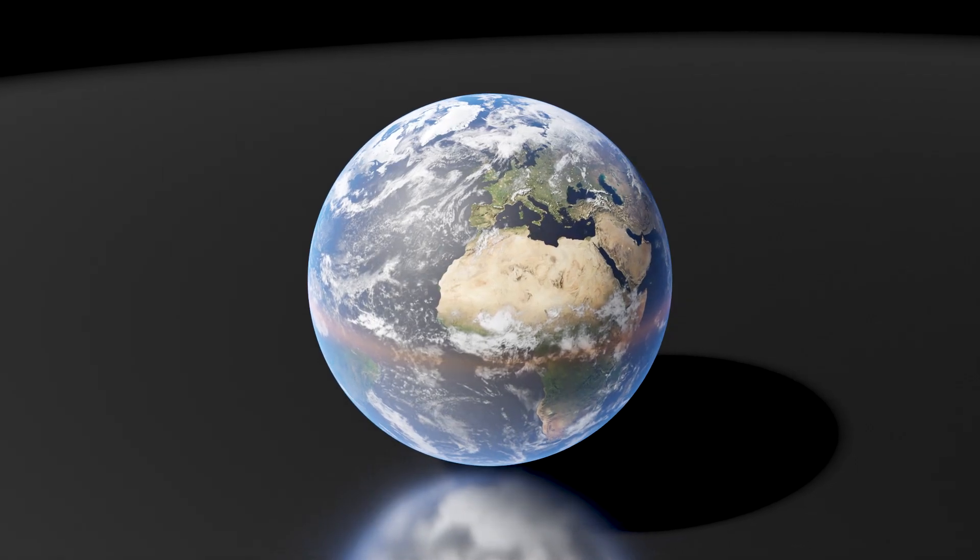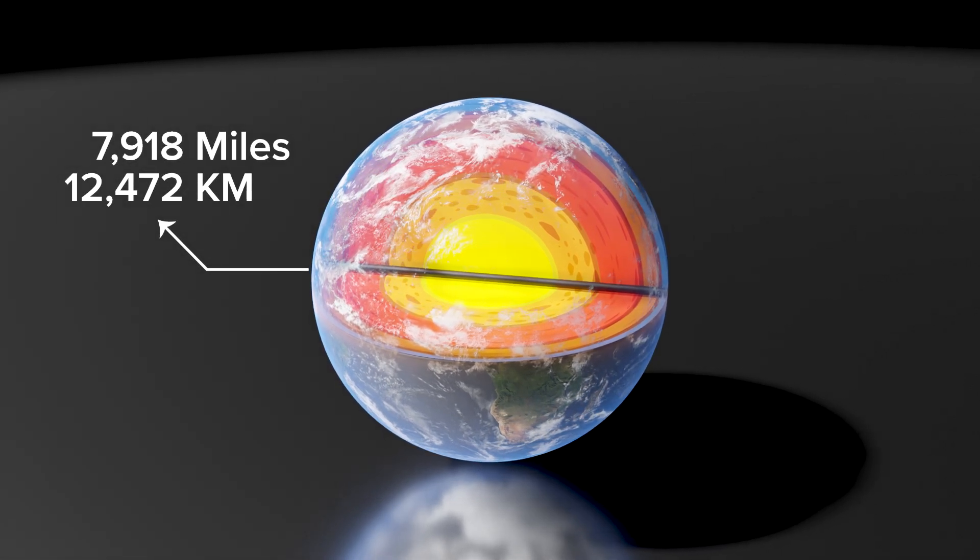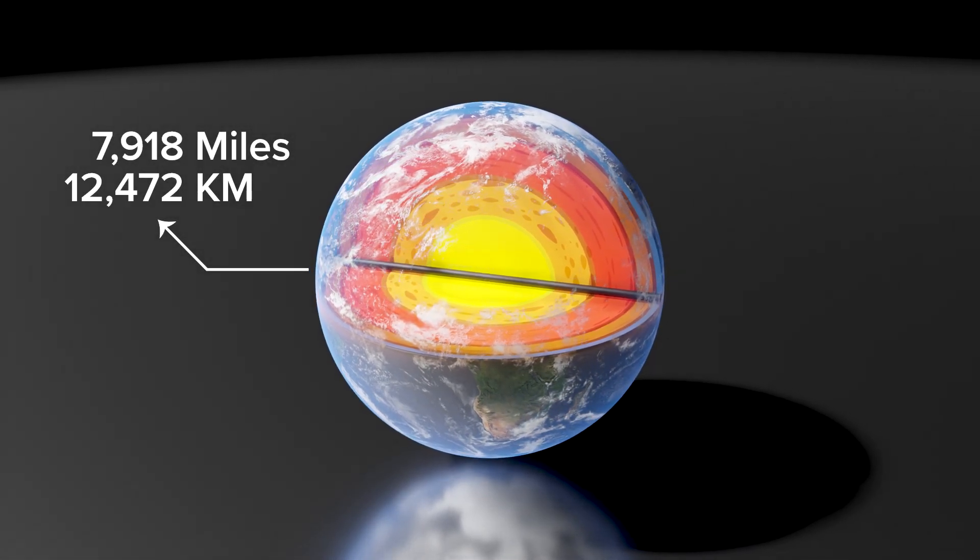Earth's diameter is about 12,742 kilometers, and its volume is approximately 1 trillion cubic kilometers.